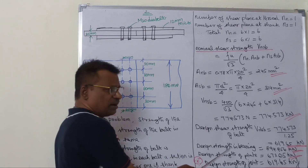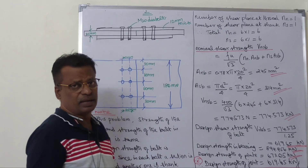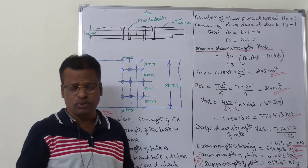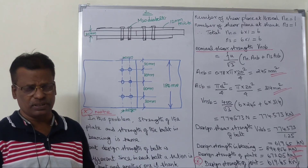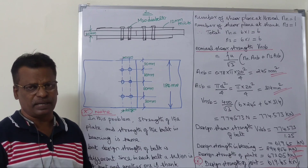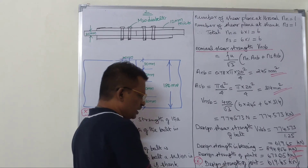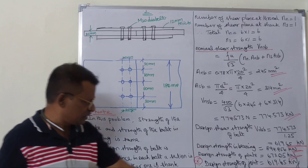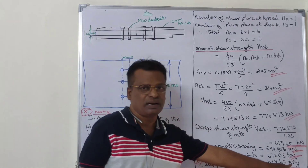The value of F of U is 515. We consider the plate, the bearing, the shear, the minimum values, and the lowest value. The design strength of the joint at the critical section is 619.65 kN.